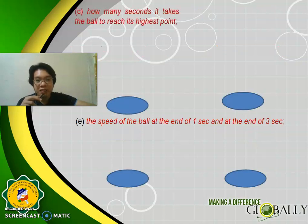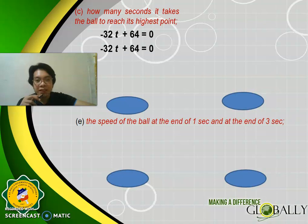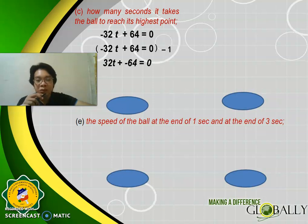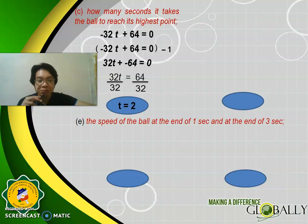For part C — how many seconds does it take the ball to reach its highest point? The ball reaches its highest point when the direction of motion changes, which is when we set the velocity equal to 0. Multiply the derivative by −1, giving 32T − 64 = 0. Equating to zero: 32T = 64. Divide both sides by 32, and we get T = 2 seconds. We will need this answer for part D.